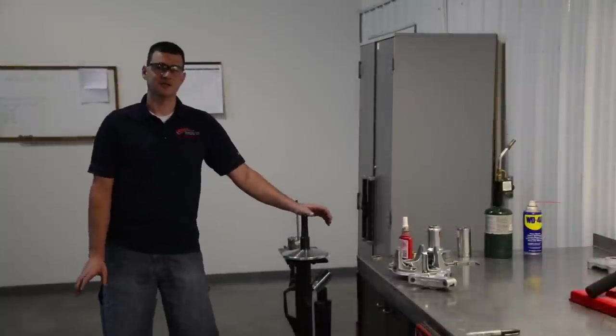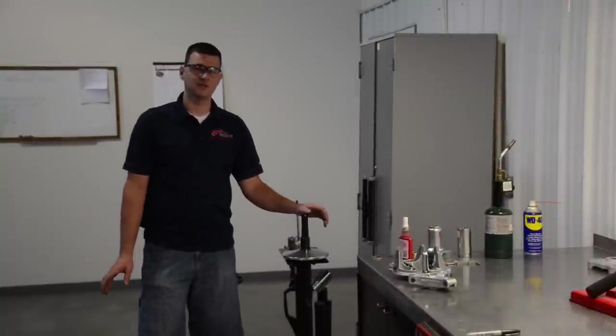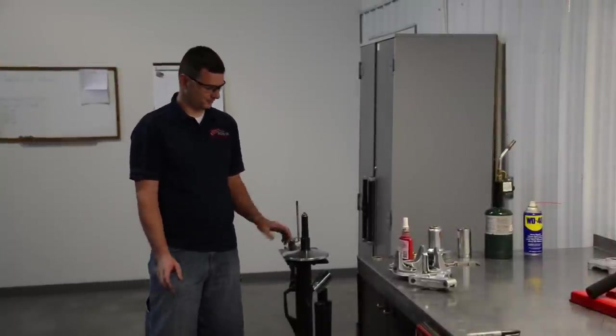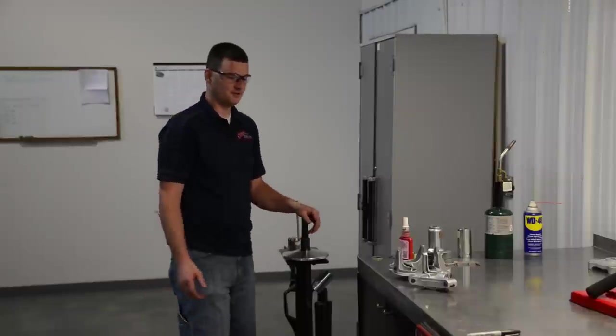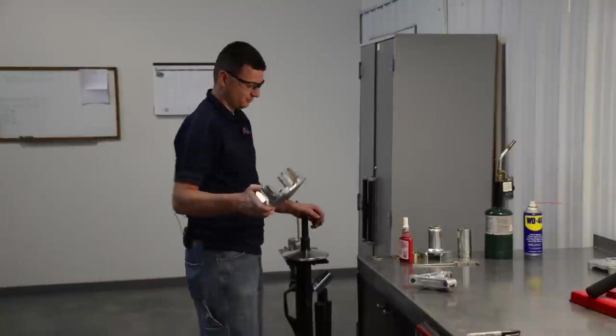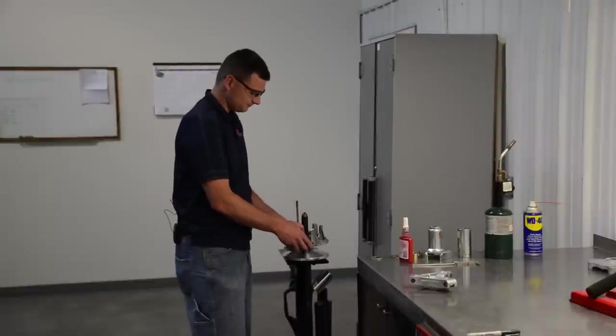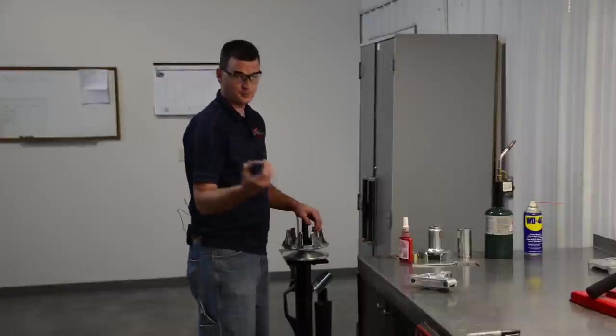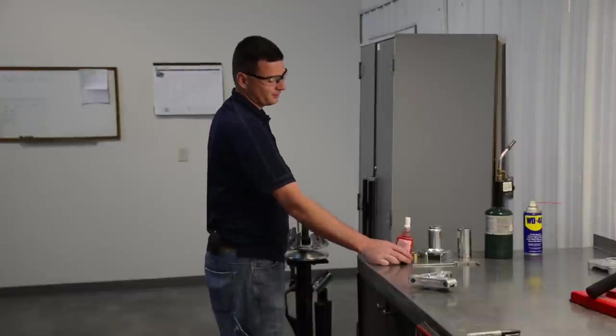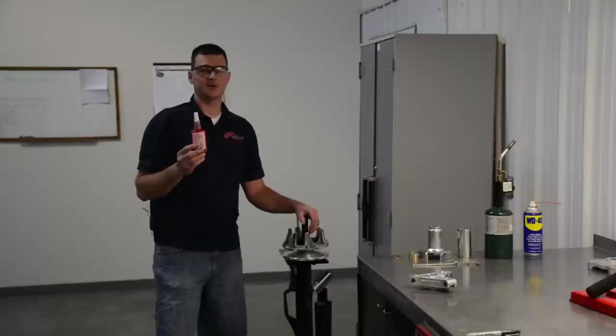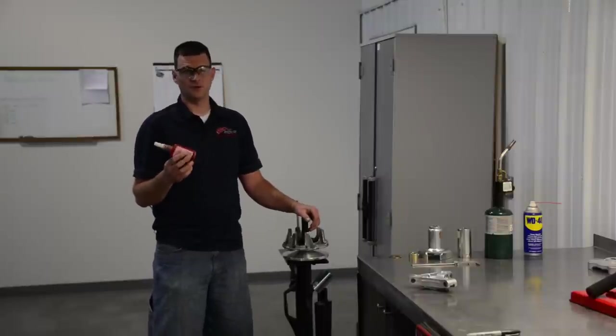So we've gone ahead and inspected the components and now we can begin the reassembly process. You see we've got our threads cleaned up, there's no more residue of thread locker there. The first thing we'll do is we will install the movable sheave and we'll follow that up with the appropriate shims. Before we can install the spider we have to remember that the factory recommends a little bit of Loctite or thread locker on the threads.